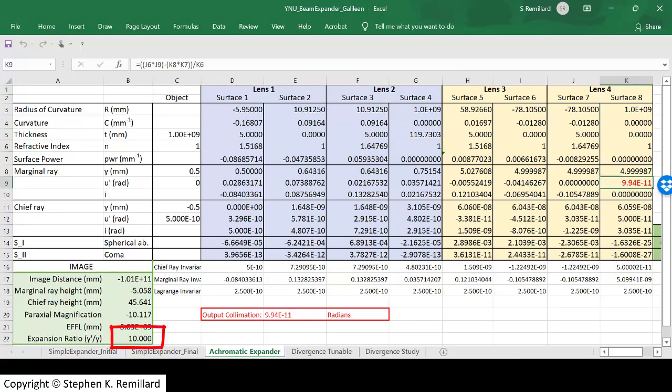And I adjusted the separation between them until I had two things. The expansion ratio was exactly 10, because that's what I designed for, and the collimation was 10 to the minus 10. Very well collimated.